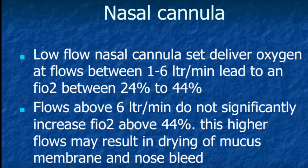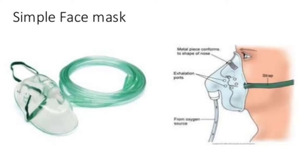First, nasal cannula — a low flow nasal cannula delivers oxygen at a flow rate of 1 to 6 liters per minute, leading to an FiO2 between 24% to 44%. Flow rates above 6 liters per minute do not significantly increase FiO2 above 44%. Higher flow rates may result in drying of the mucous membranes of the nose.